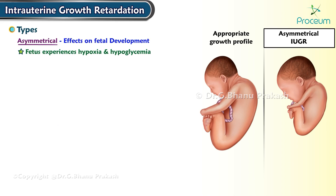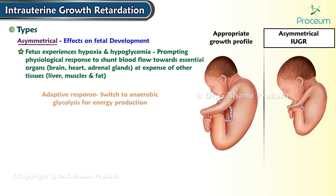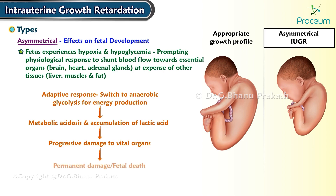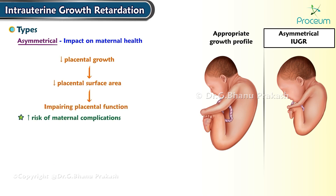The fetus experiences hypoxia and hypoglycemia, prompting a physiological response to shunt blood flow towards essential organs like the brain, heart, and adrenal glands at the expense of the liver, muscles, and fat. This adaptive response includes a switch to anaerobic glycolysis, leading to metabolic acidosis and accumulation of lactic acid, potentially causing progressive and permanent damage to vital organs or fetal death. Asymmetrical intrauterine growth restriction is also associated with decreased placental surface area, elevating the risk of maternal complications including preeclampsia, preterm labor, and vaginal bleeding.